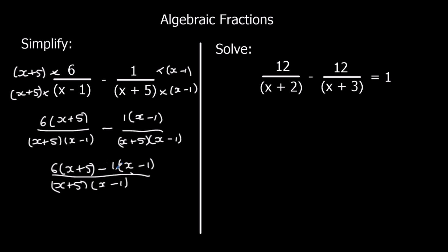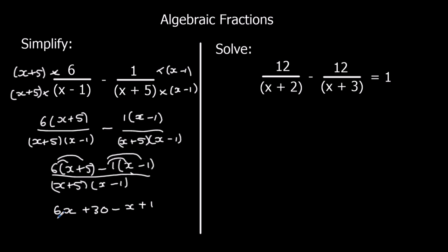So when I take away minus 1, that actually means plus 1. We simplify the top line: we do 6 times x — 6x — plus 30, minus x, and then plus 1. When I expand this bracket, it becomes a plus 1. Over x plus 5, x minus 1.